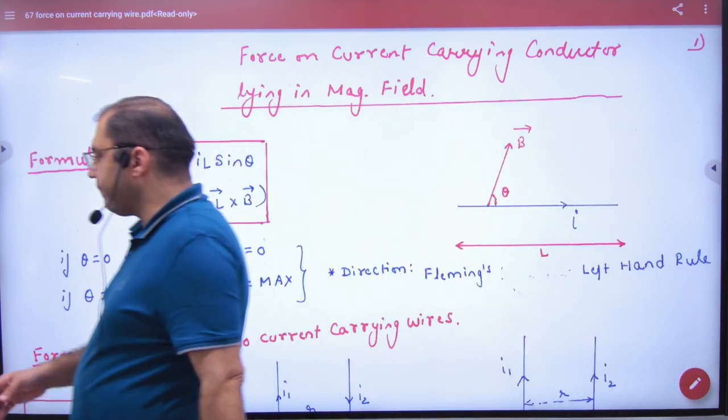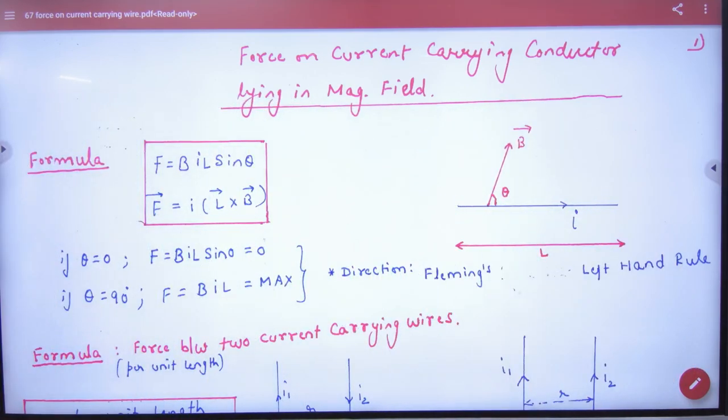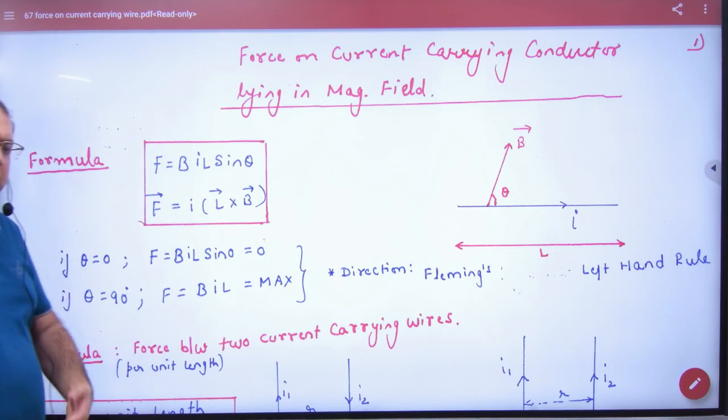So in this case, why does it look like this? When did it look like a force on the wire? What did it look like?